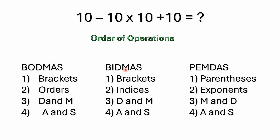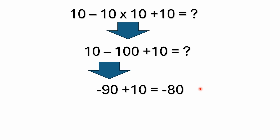In BIDMAS, "orders" is referred to as "indices" — it's really all the same thing. In North America, PEMDAS is used a lot, and the E stands for exponents, which isn't fully descriptive since you still have square roots and factorials. "Orders" or "indices" are more general terms covering everything. PEMDAS still covers factorials and square roots — I just don't think the term is as descriptive. But regardless, when we look at this problem...